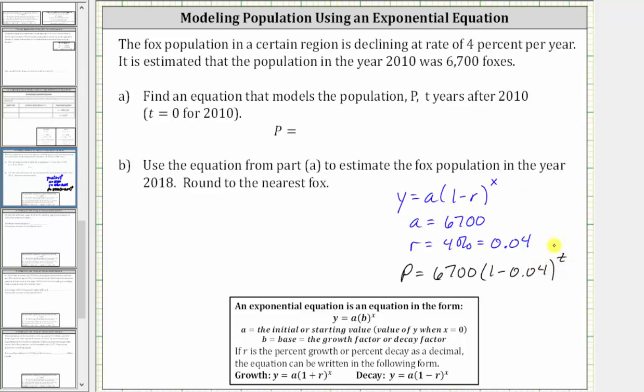Simplifying, we have the equation P equals 6,700 times 0.96 raised to the power of t. The base of 0.96 should make sense because if the population is decreasing 4% per year, each year 96% of the population remains.